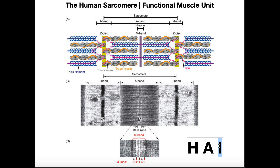To reiterate: the I-band has no thick filaments — only thin filaments (actin), and that's why it corresponds to the thin letter I. The H-zone, regardless of contraction state, only has myosin — only thick filaments, no thin filaments. So: H-zone = only thick filaments/myosin; A-band = entire length of myosin (mostly overlapping with actin); I-band = only thin filaments/actin.